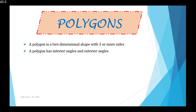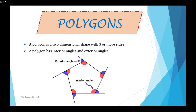A polygon has interior angles and exterior angles. As seen in the diagram below, the interior angles are the angles shown in orange that are inside the polygon, and the exterior angles are the outer angles.